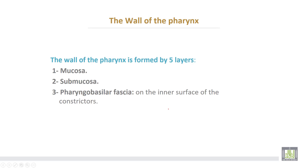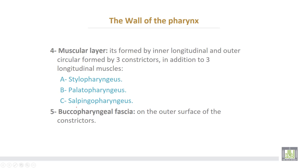The whole of the pharynx is formed by five layers. First is mucosa, second is submucosa. The third layer is formed by the pharyngobasilar fascia, which lies on the inner surface of the constrictors of the pharynx. The fourth layer is the muscular layer, formed by inner longitudinal and outer circular muscle fibers forming three constrictors, in addition to three longitudinal muscles: stylopharyngeus, palatopharyngeus, and salpingopharyngeus muscles.